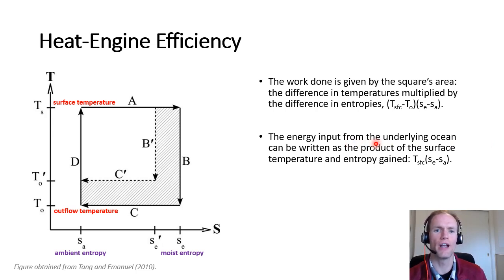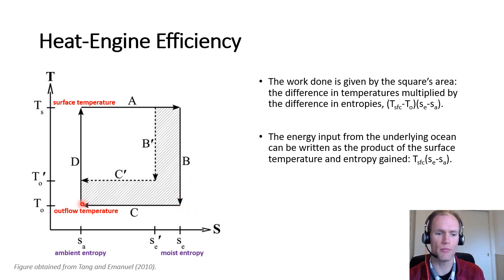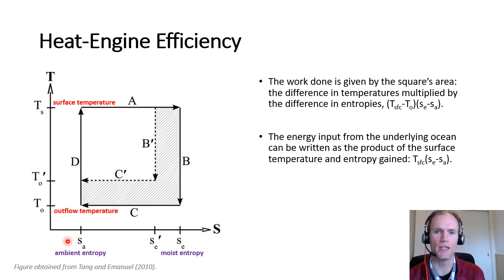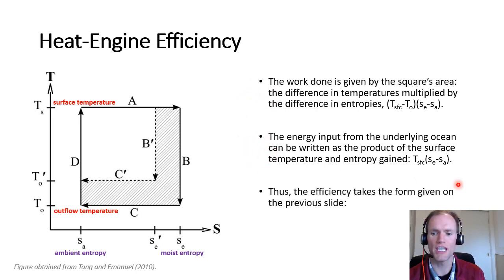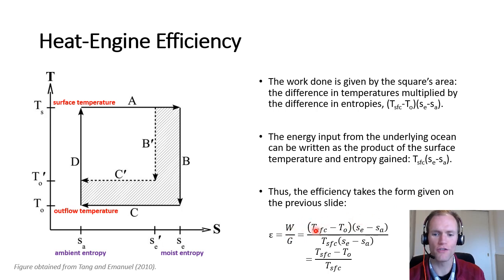The energy gained from the underlying ocean is related to the difference in moist and ambient entropy at the surface temperature — written as the surface temperature times the entropy difference. Taking the ratio of work W to energy input G, those entropy differences cancel, giving us the efficiency as the surface minus outflow temperature divided by the surface temperature.